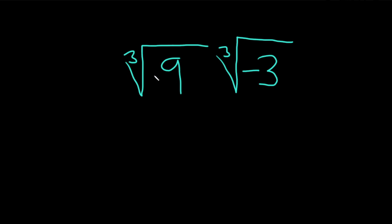So in a problem like this, because they're both cube roots, all we have to do is multiply the 9 and the negative 3 to get started. And the reason we can do that is because both of these numbers are 3s, they're the same.